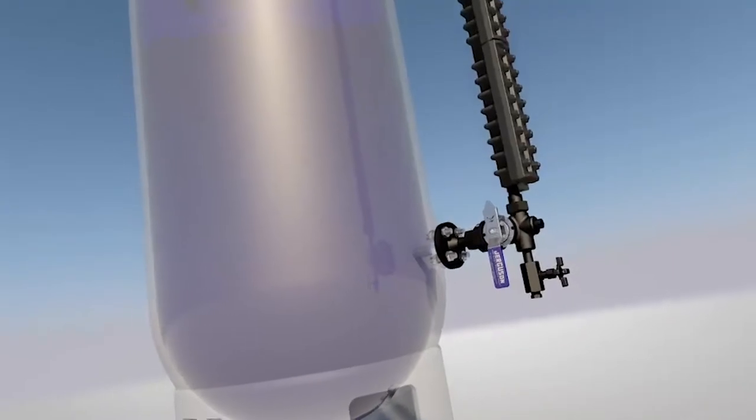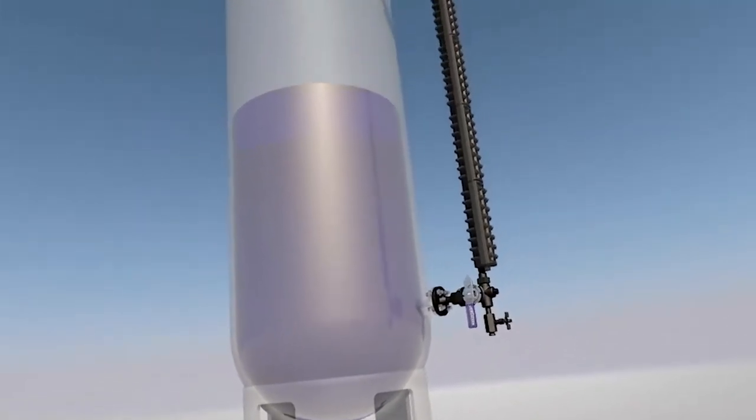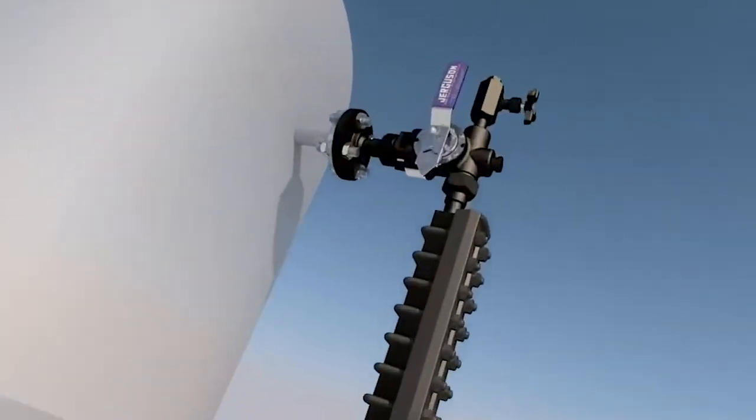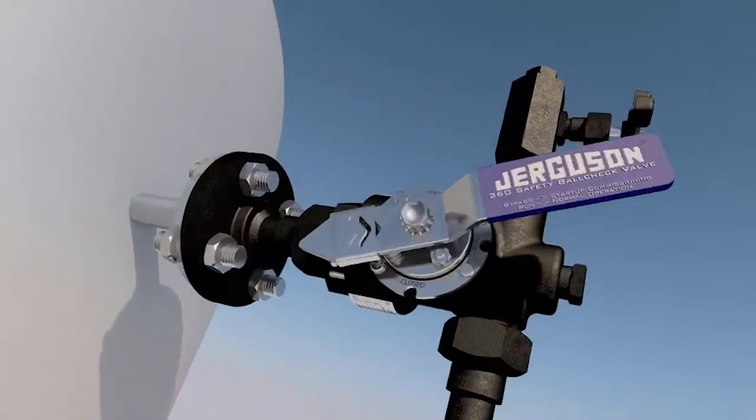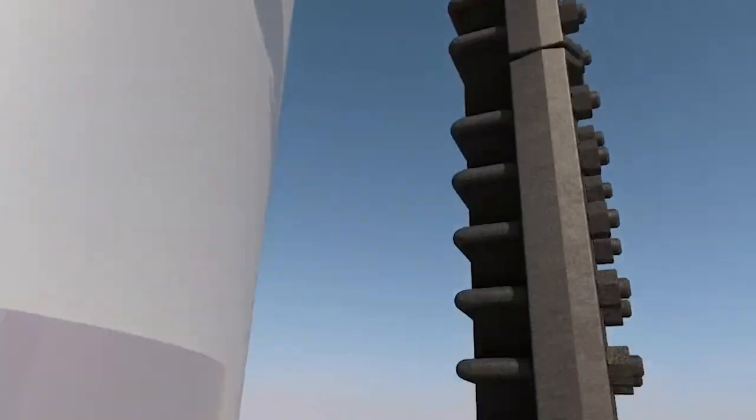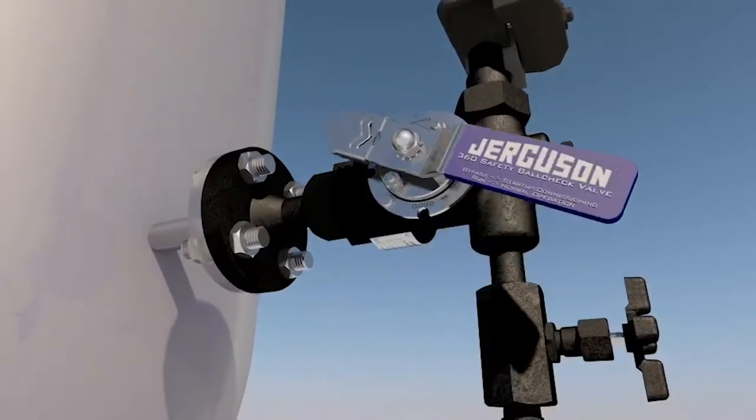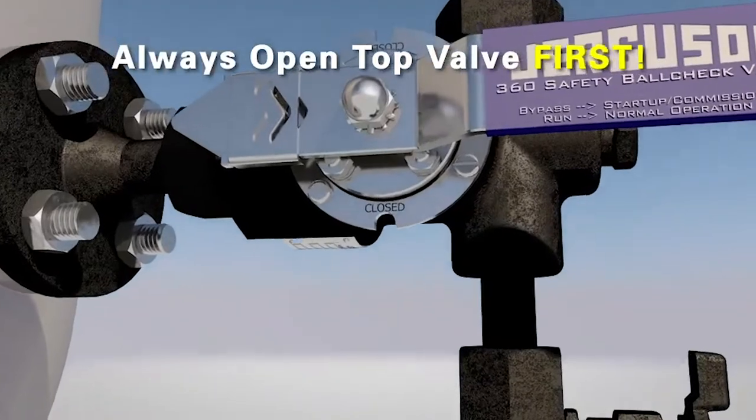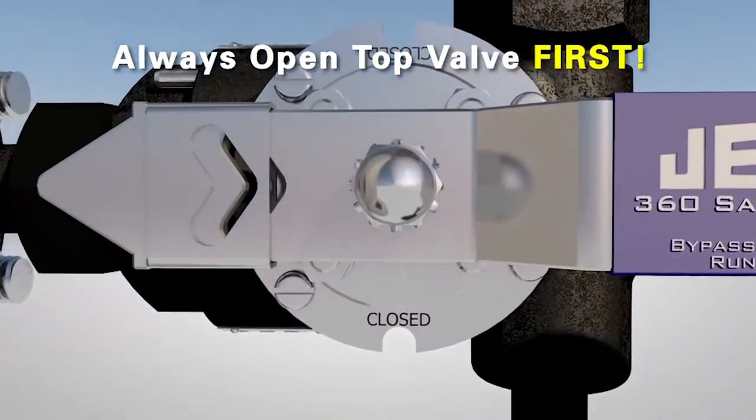The commissioning procedure is quite simple compared to traditional glass gauge ball check valves. When there is already liquid present in the vessel, open the top valve to the bypass position, then the bottom valve. It is best practice to always open the top valve first when commissioning any level device.